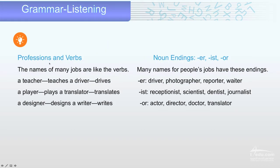There are professions and verbs. Profession means jobs, and verbs are actions. The names of many jobs are like the verbs — for example, teacher teaches, player plays. Many job names have endings like ER, such as driver, photographer, reporter, waiter; IST, such as scientist; and OR, such as doctor.